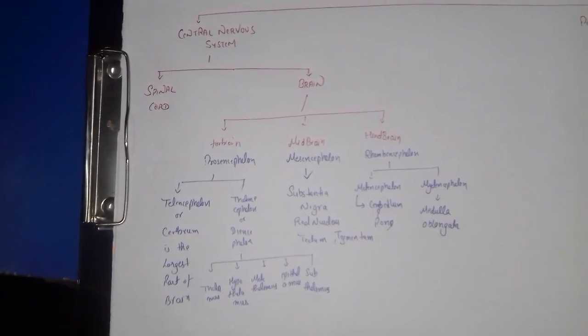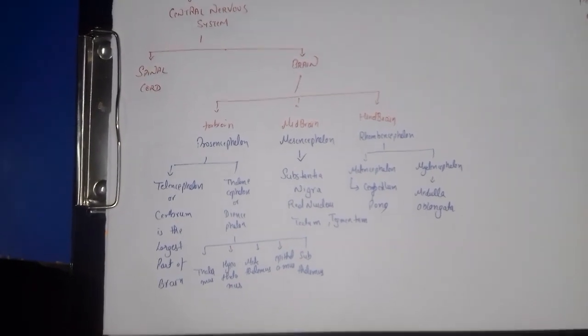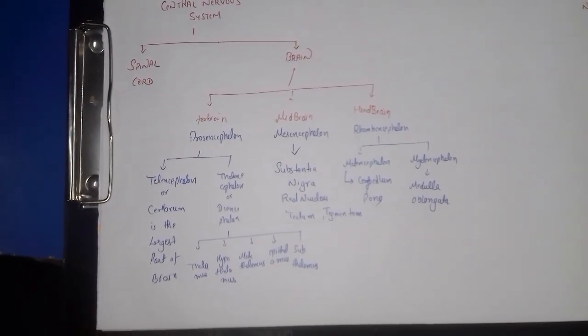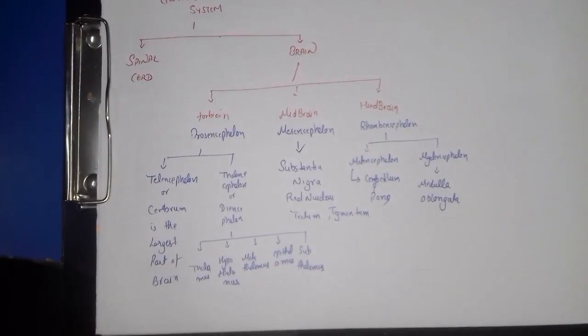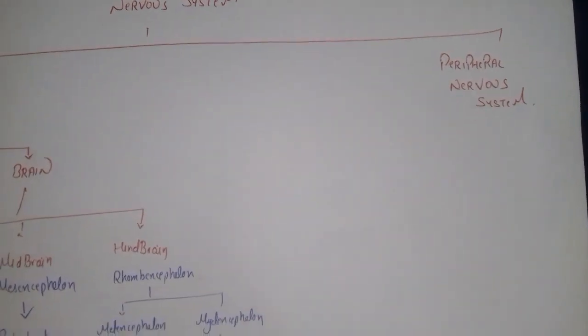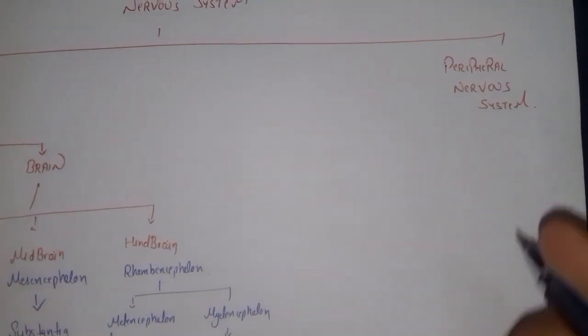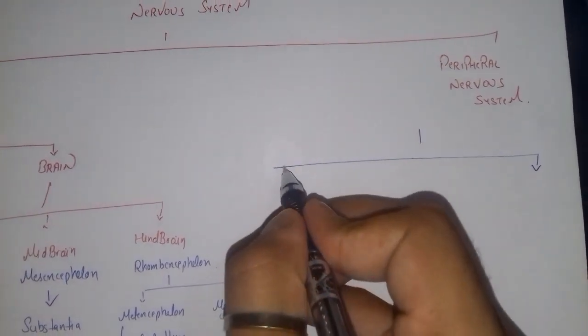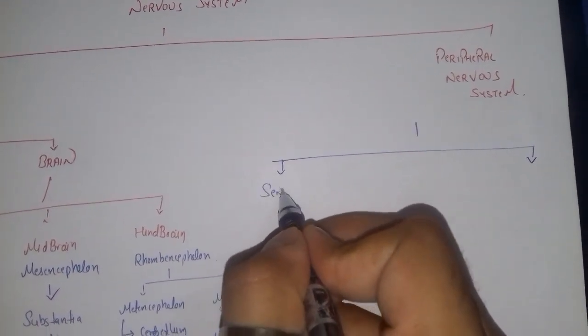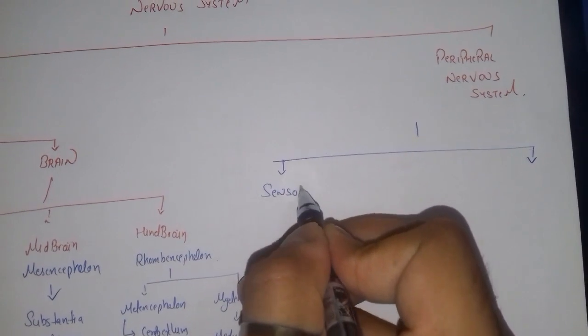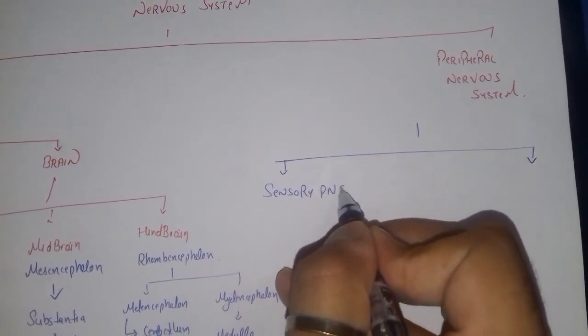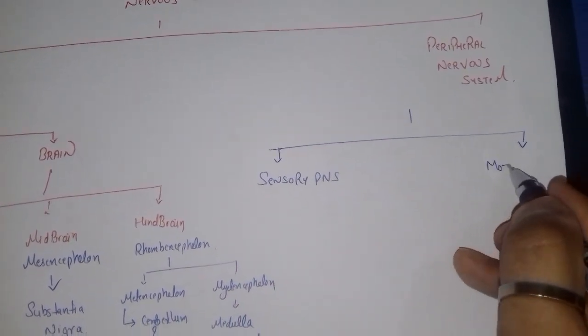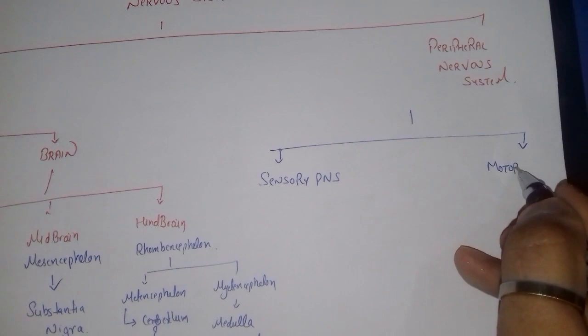So guys, this was the classification of the central nervous system, which included the brain and the spinal cord. Now coming on to the classification of the peripheral nervous system — the peripheral nervous system is divided into two parts: the sensory PNS and the motor PNS.